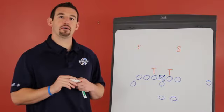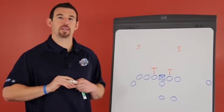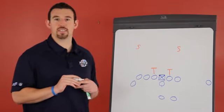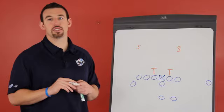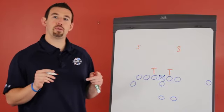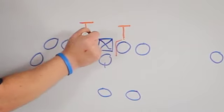There's two main areas you need to think about defending when stopping the wing tee team. The first is this inside area. I would start by aligning both my tackles head up on the guard. On the snap of the ball, I have them penetrate through the A-gaps.